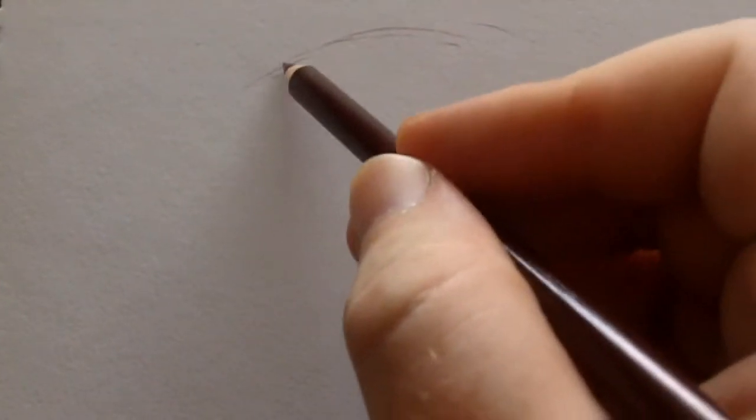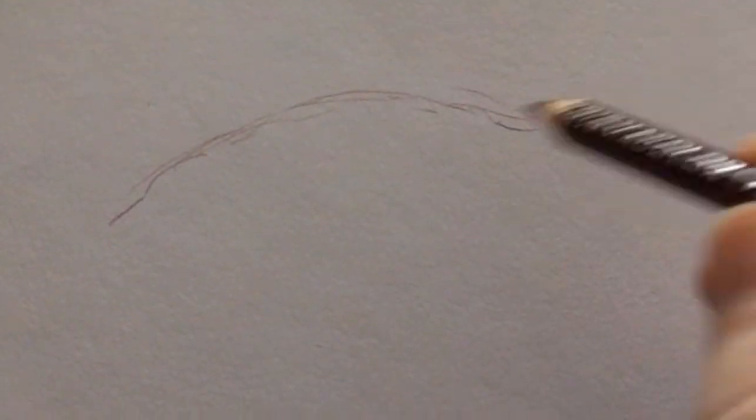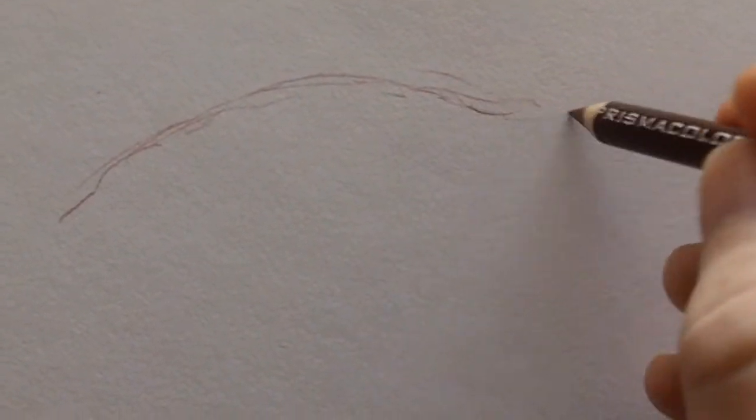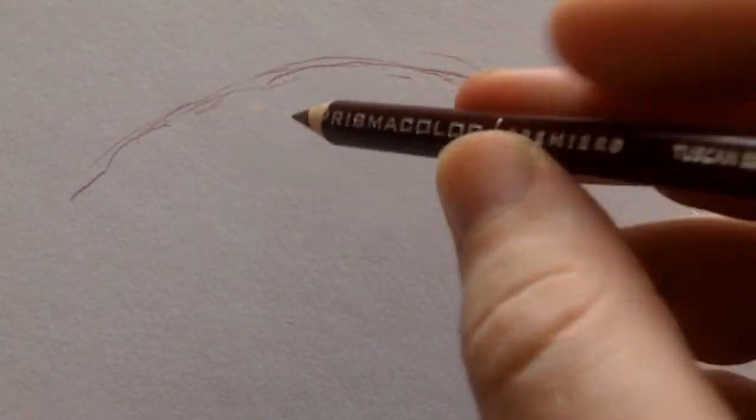Hi, this is Wayne Tully and this is day 21 in the drawing journal video series. Today I'm going to draw a random demon hand and I'm going to try and draw it with Prismacolor pencils, maybe a few shades of red. This is like a Tuscan red.